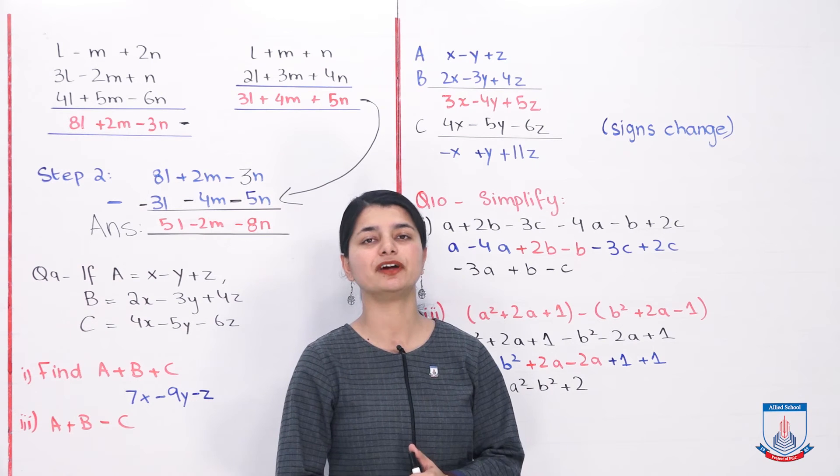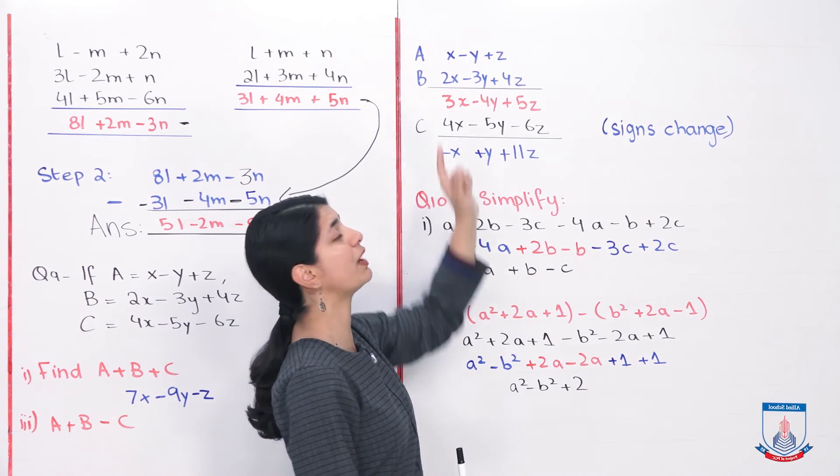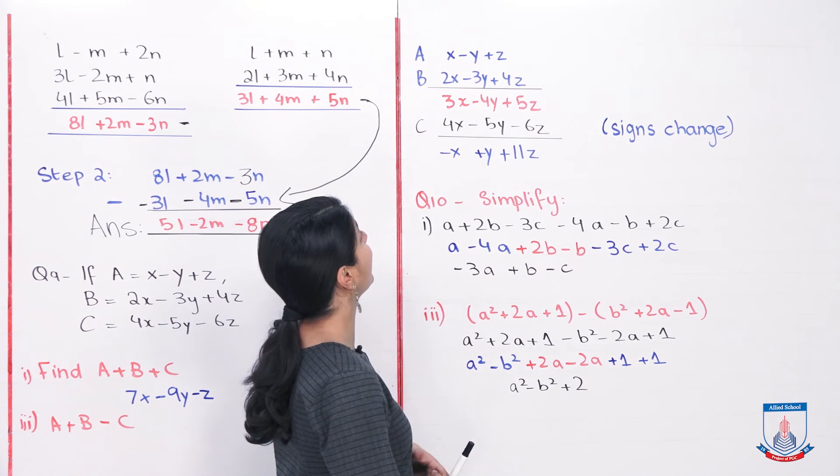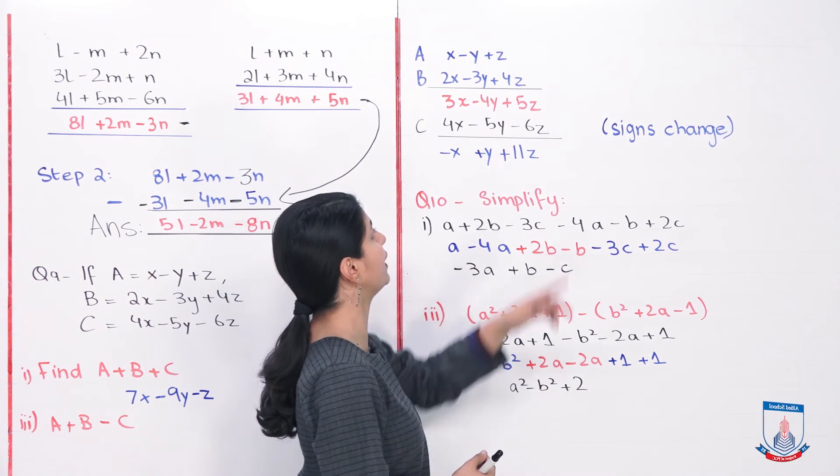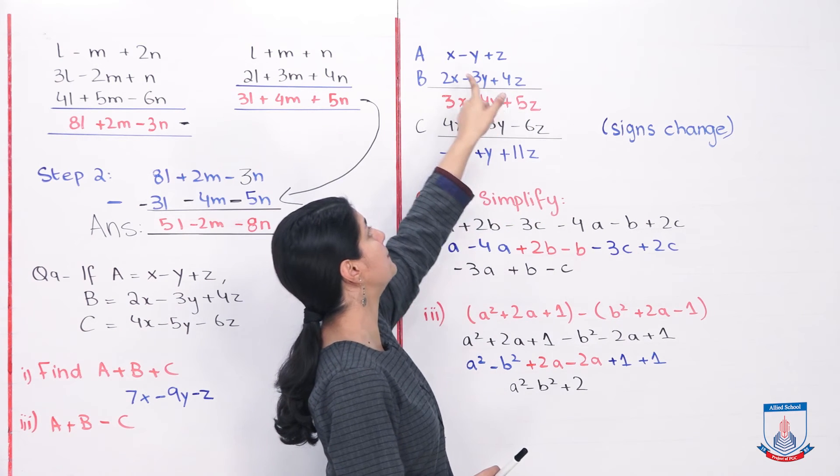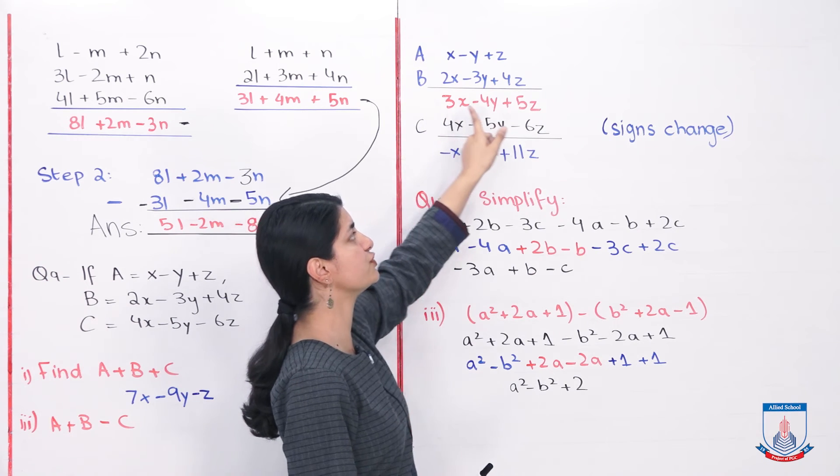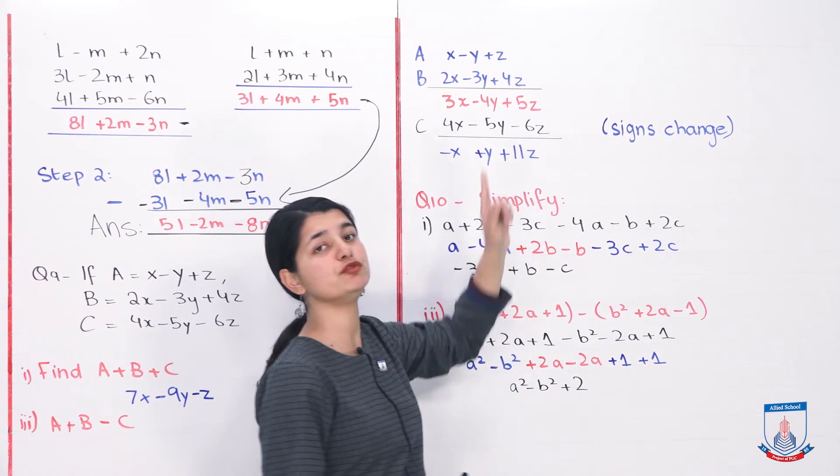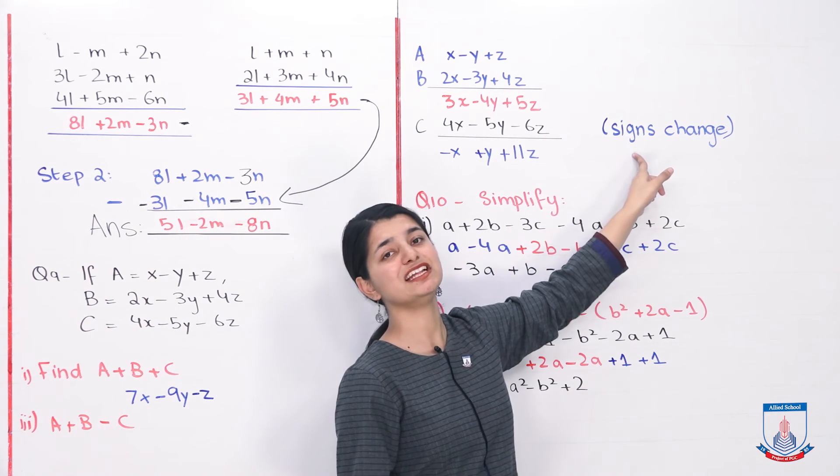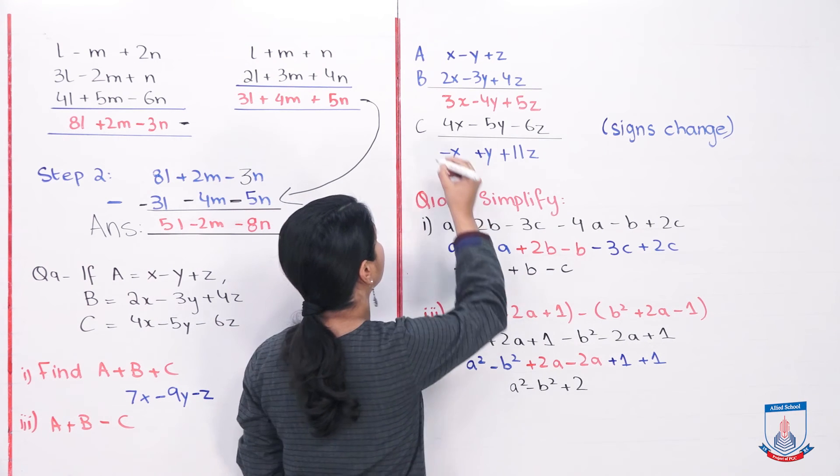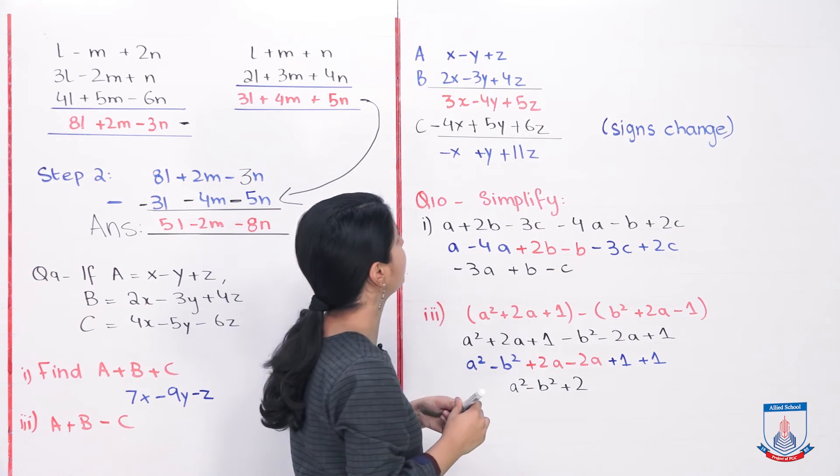So in question number nine's third part, first we have to add A and B. A's expression is X minus Y plus Z. B's expression is 2X minus 3Y plus 4Z. Adding these two, Z plus 4Z, 5Z. Minus Y, minus 3Y, minus 4Y. X plus 2X, 3X. So this is my answer. From that I have to subtract C. C was 4X minus 5Y minus 6Z. I have to change the signs. I will change the signs. This is positive, will become negative. This is positive, this will also become positive.